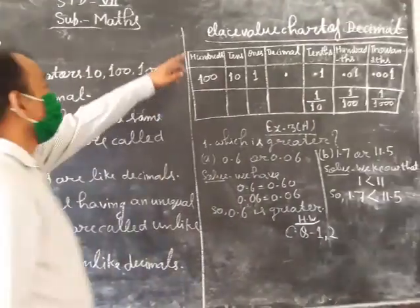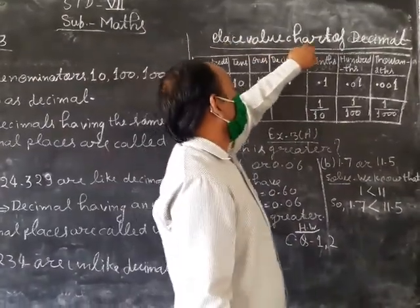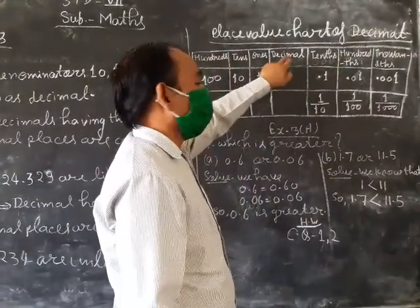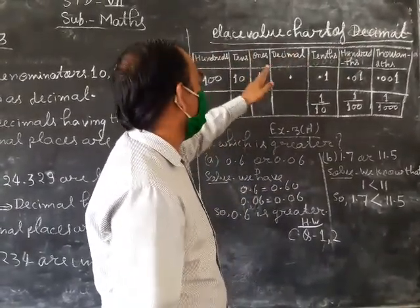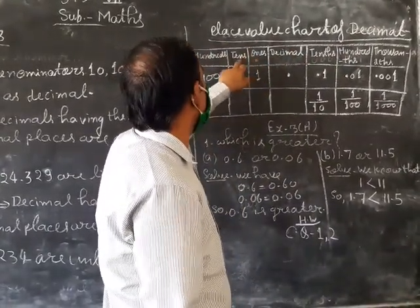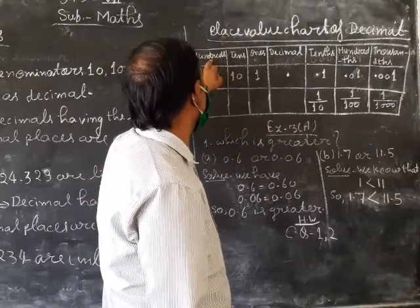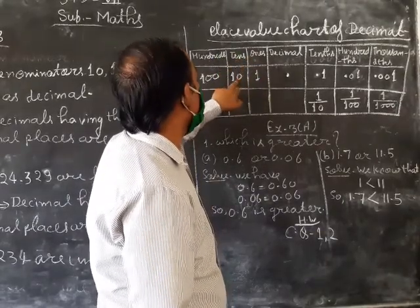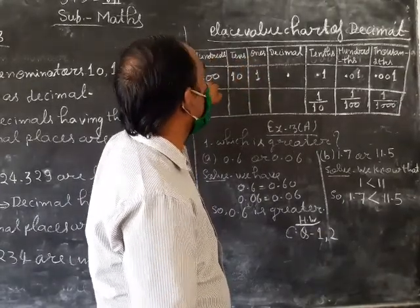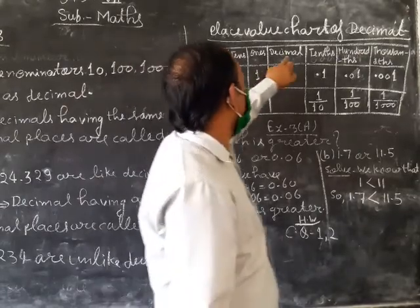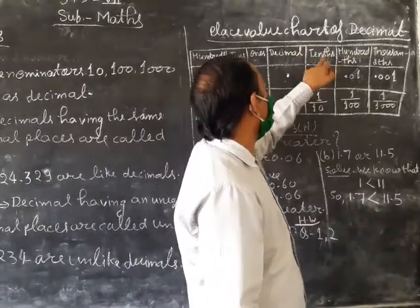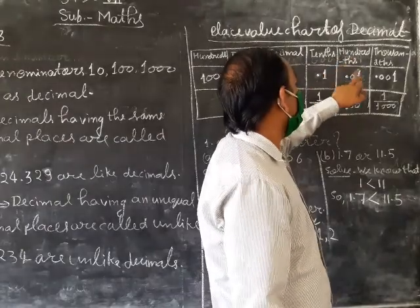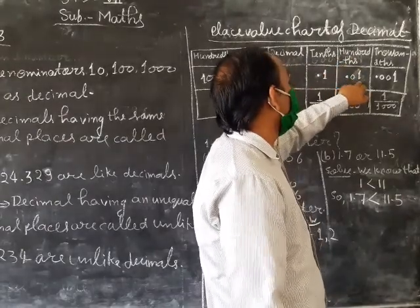Next, place value chart of decimal. Here decimal is important. Ones means one. Tens means ten. Hundreds means hundred. After decimal: tenths means 0.1, hundredths means 0.01.